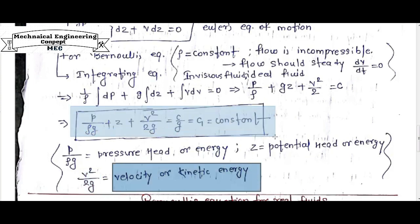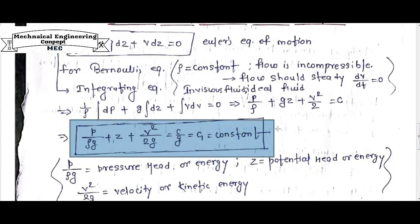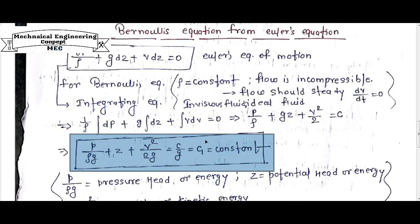And this resultant equation will be also known as Bernoulli's equation of motion with respect to Euler equation of motion: P by rho g plus z plus v square by 2g is equal to constant. This equation is for ideal fluid condition.